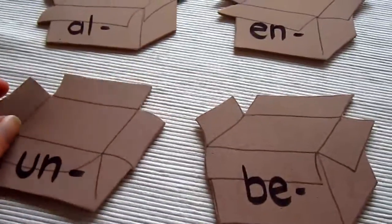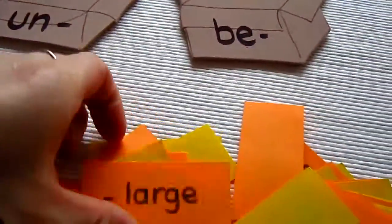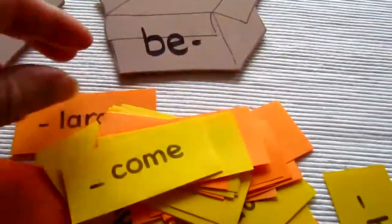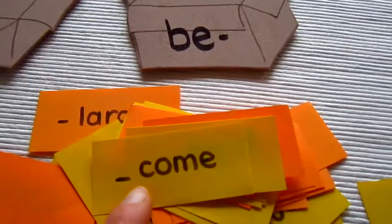And they're little shapes of boxes, cardboard boxes. And then I've cut out a whole bunch of little colored papers, and I've written words on them leaving out the prefix.